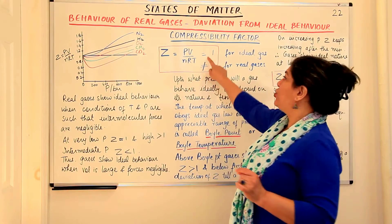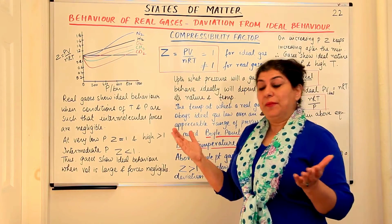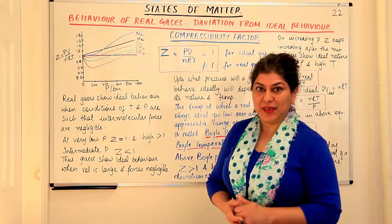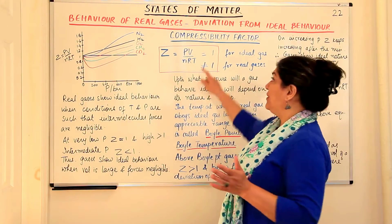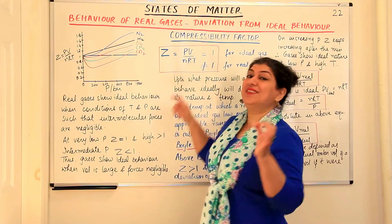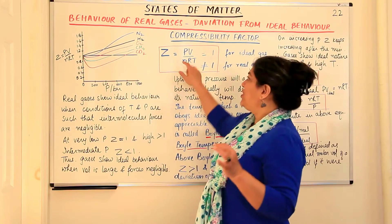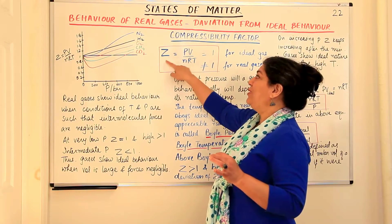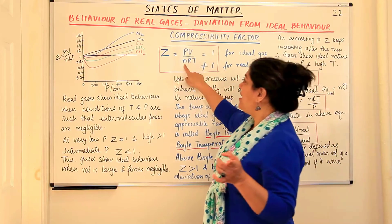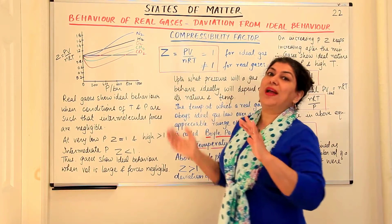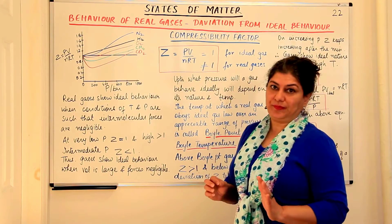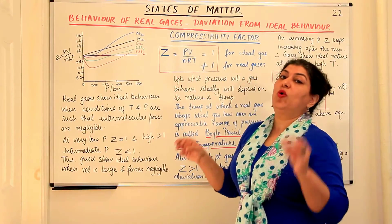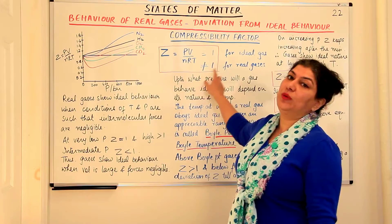For an ideal gas this ratio should be equal to 1, but gases are not ideal — they are real and they deviate from ideal behavior. In the case of real gases, PV is not equal to nRT. If PV is larger than nRT then Z would be greater than 1, and if nRT is greater than PV then Z would be less than 1. So for real gases, the compressibility factor is not equal to 1.